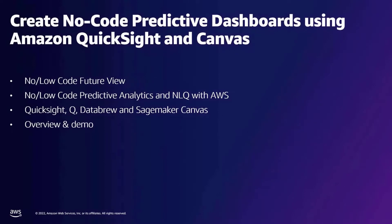We have an exciting agenda for today. We're going to talk about the challenges that customers face in data prep analytics, and we'll discuss the no-code, low-code future view. We're going to look at how you can utilize a low-code, no-code approach with AWS services. We will also discuss key features of Q, QuickSight, Canvas, and DataBrew. Finally, we will have an interactive demo of these four services.